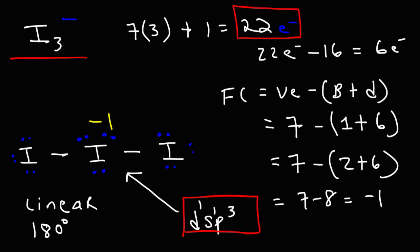So that's it for this video. Now you know how to draw the Lewis structure of the triiodide ion, I3 minus. Thanks for watching.